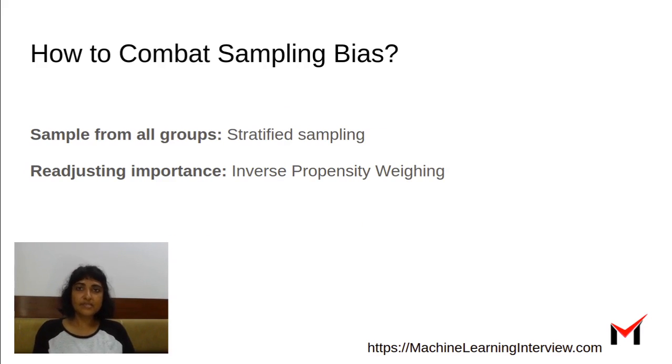So typically, if you have data with sampling bias, one strategy is to do something like stratified sampling where we try to avoid the bias in the first place or we take that data and try to do some kind of sampling on top of the data in order to get a more representative sample from all the different groups. Another approach is to readjust the importance given to groups that are underrepresented and this is what is inverse propensity weighing.